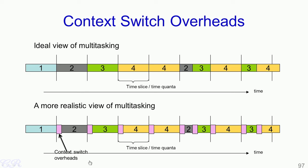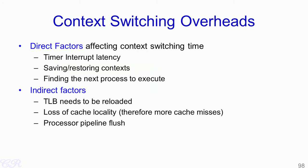Context switch overhead can be significant. The factors affecting it are classified as direct or indirect. Direct factors include: timer interrupt latency, the time taken to save and restore context for the various processes, and the overhead caused by the scheduler choosing the next process to execute.